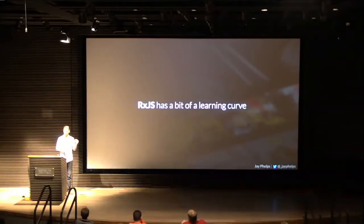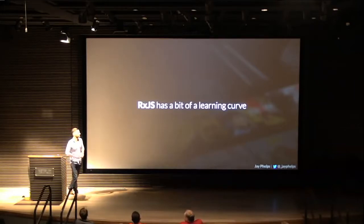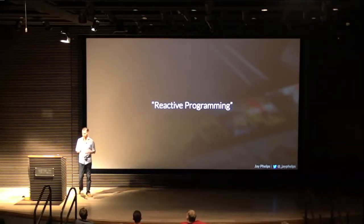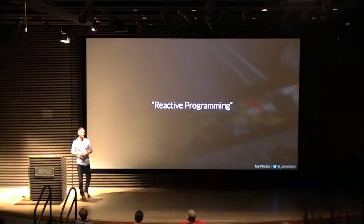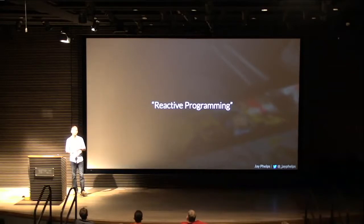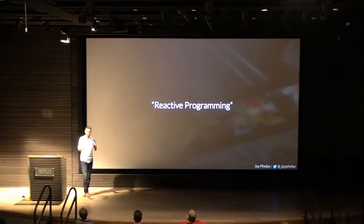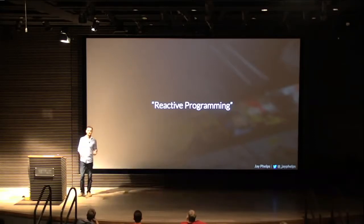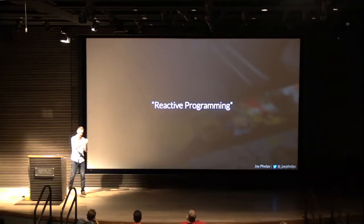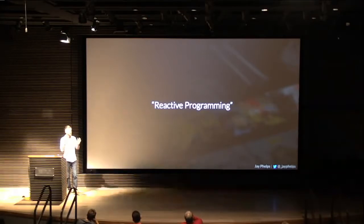RxJS does have a bit of a learning curve because of reactive programming — the paradigm it's really based on. It's kind of hard to wrap your brain around: you're declaring transformations but nothing's happening right then. Your epic is set up with all the pipes installed, but there's no water running through those pipes yet — until a future point when someone dispatches an action, then a trickle of water flows through that infrastructure.